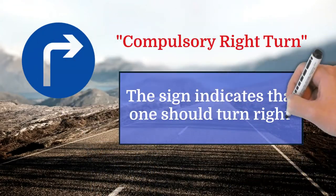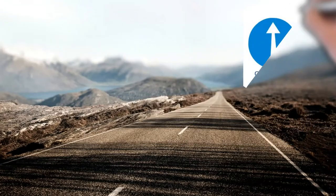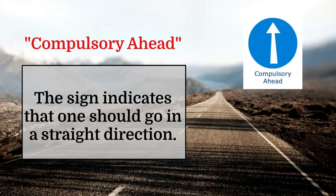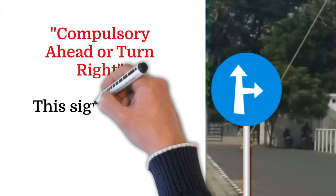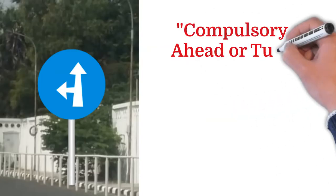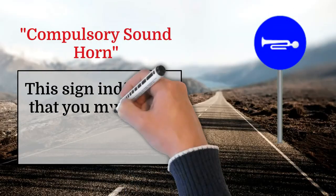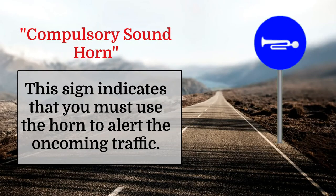Compulsory right turn: the sign indicates that one should turn right. Compulsory ahead: the sign indicates that one should go in a straight direction. Compulsory ahead or turn right: this sign gives an indication to either go straight or turn right. Compulsory ahead or turn left: this sign gives an indication to either go straight or turn left. Compulsory sound horn: this sign indicates that you must use the horn to alert the oncoming traffic.